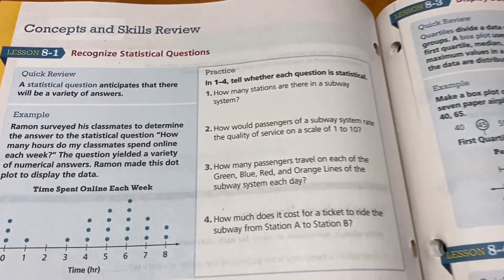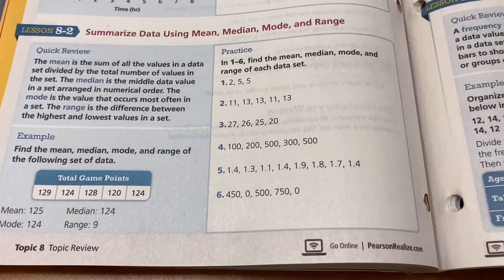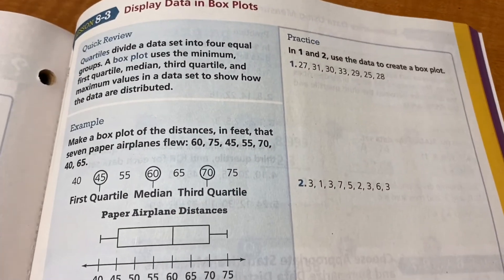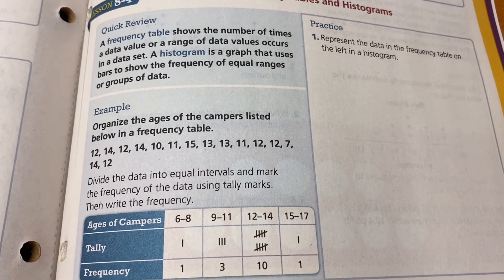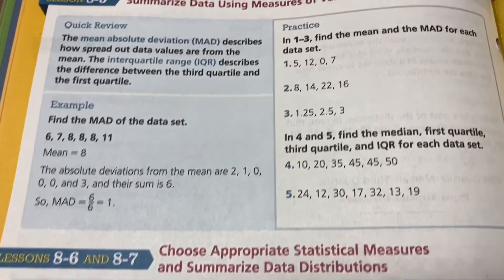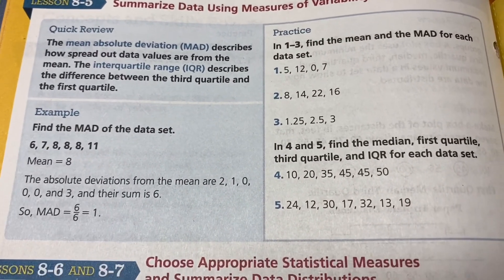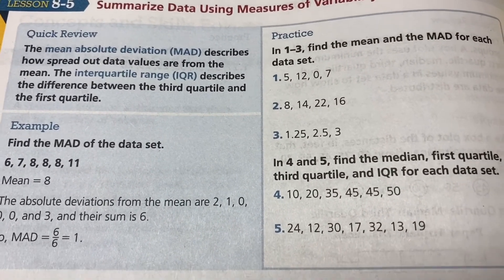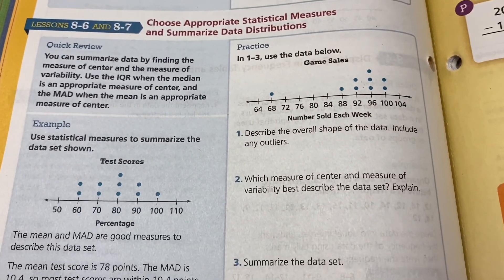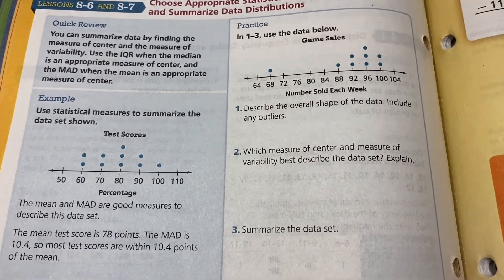Topic eight, our very last topic: data analysis. These are some box plots and frequency tables. Variability and the MAD — that's the mean absolute deviation. And our last lessons right here.